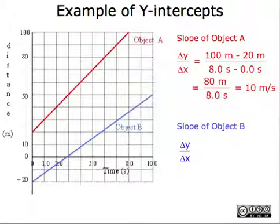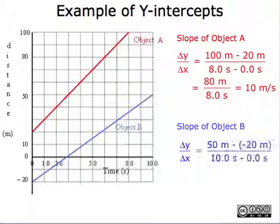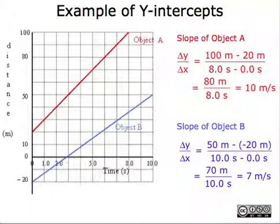Now we can look at the slope of object B. The change in y over the change in x: the change in y is 50 meters minus negative 20 meters, and the change in x is 10 seconds minus 0 seconds. Due to the negative in front of the 20 meters, we add 50 meters plus 20 meters, which gives us 70 meters. For the change in x, 10 minus 0 gives us 10 seconds. So 70 meters divided by 10 seconds equals 7 meters per second.